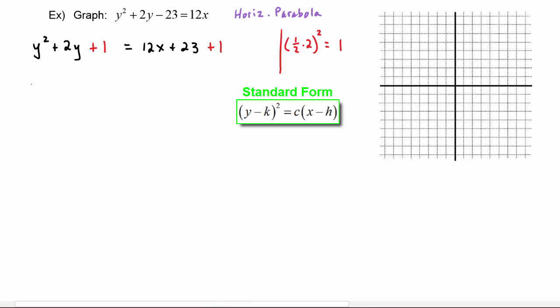The left hand side can be rewritten as (y + 1)² and the right hand side is 12x + 24. Now to get it into that standard form we need to factor the right hand side so it's going to become 12(x + 2). The left hand side remains (y + 1)².